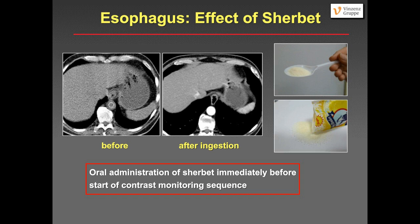With sherbet, you get good distension of the esophagus. You can use either the effervescent granules used for double-contrast upper GI studies, or what we use is sherbet bought in a candy store — one spoonful without water given immediately prior to starting the contrast monitoring sequence. The patient swallows it and you get good distension. You can see: before the contrast monitoring sequence there is no distension of the esophagus, and just a few seconds later there is nice distension with a very thin and delicate wall, confirming no tumor in that segment.